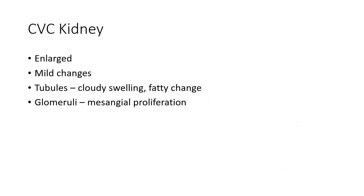In CVC kidney, the kidneys are grossly enlarged, similar to the spleen, but the microscopic changes are rather mild. The renal tubules may show degenerative changes like cloudy swelling or fatty change, and the glomeruli show mesangial proliferation.